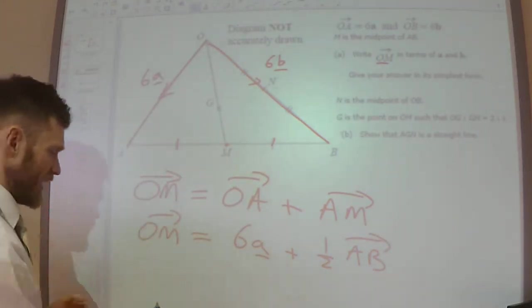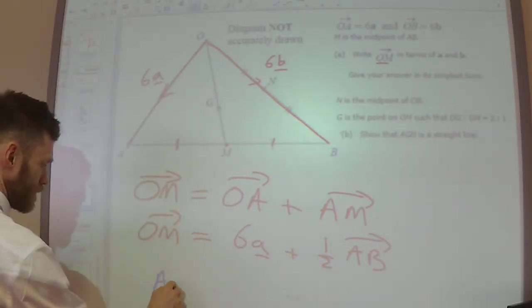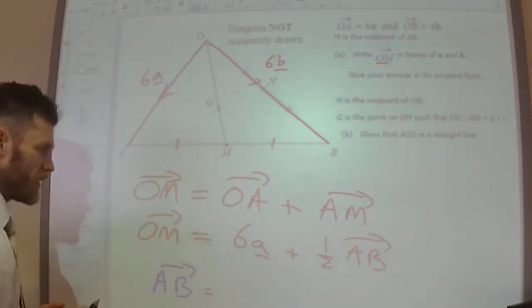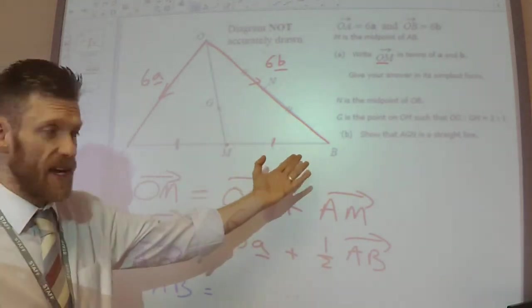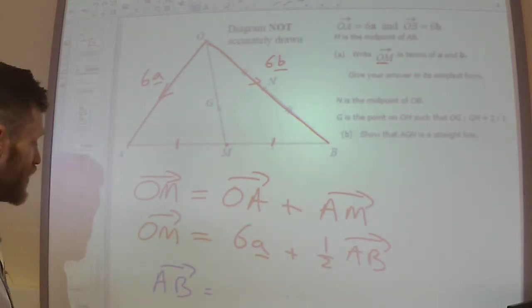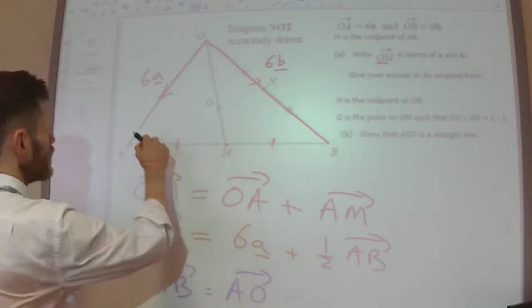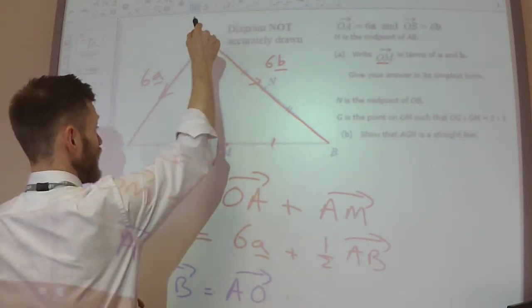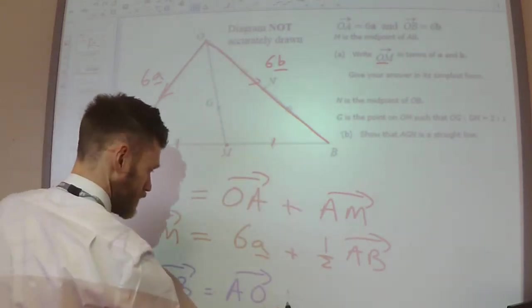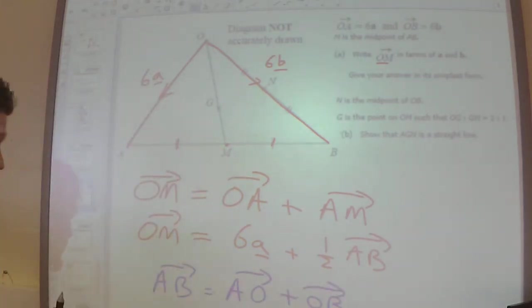Now, A to B, what's that? Again, I've not got that written on my diagram. But I could write A to B as being the combination of A to O plus O to B. It's going to give the same result as starting from A and ending at B.